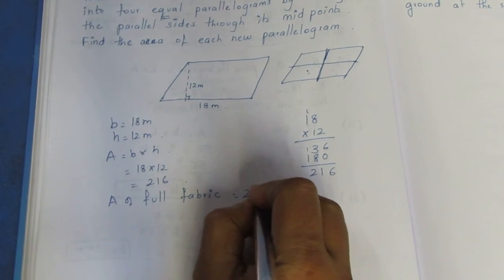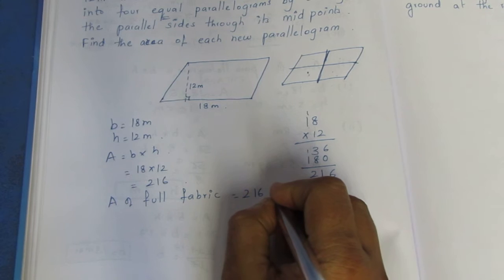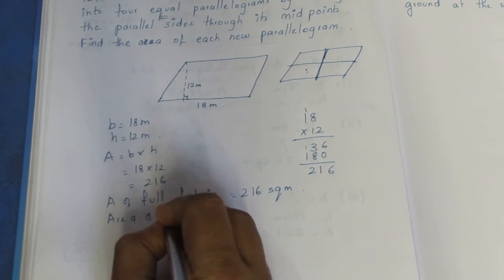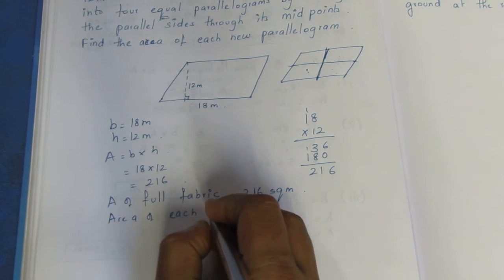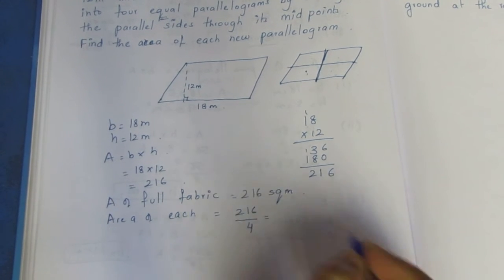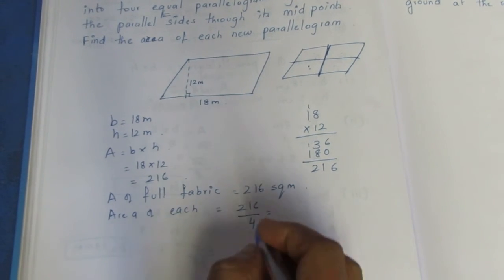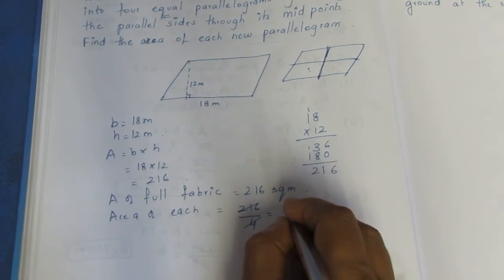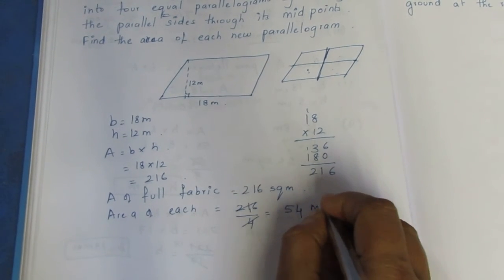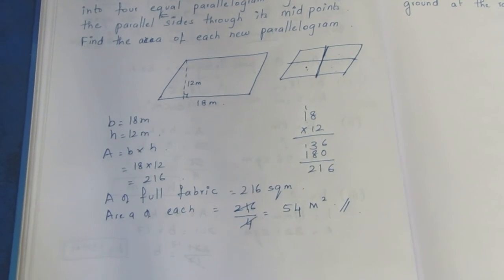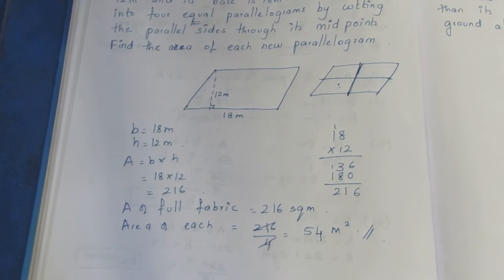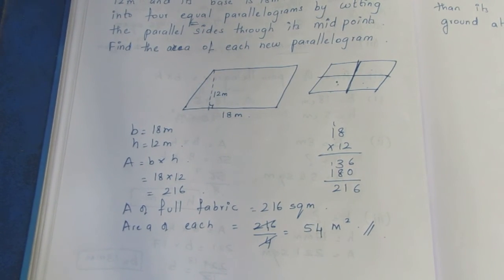The area of the full cloth is 216 square metres. The area of each new parallelogram equals 216 divided by 4, which gives 54 square metres. Thank you.